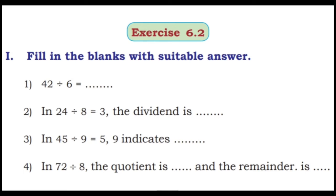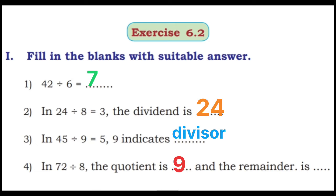Let's see exercise 6.2. First: fill in the blanks with suitable answers. 42 divided by 6 is equal to 7. In 24 divided by 8 is equal to 3, the dividend is 24. In 45 divided by 9 is equal to 5, the 9 indicates the divisor. In 72 divided by 8, the quotient is 9 and the remainder is 0.